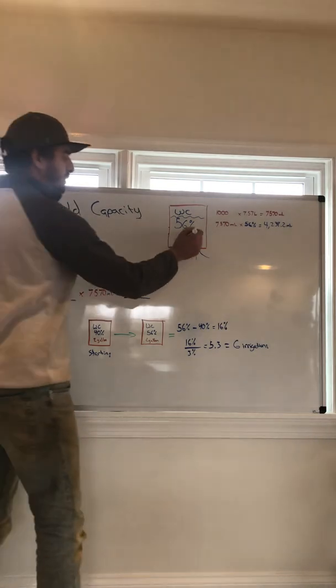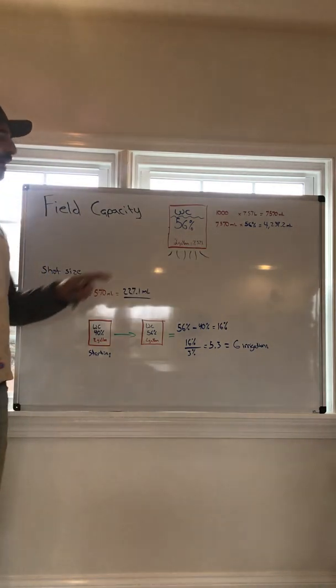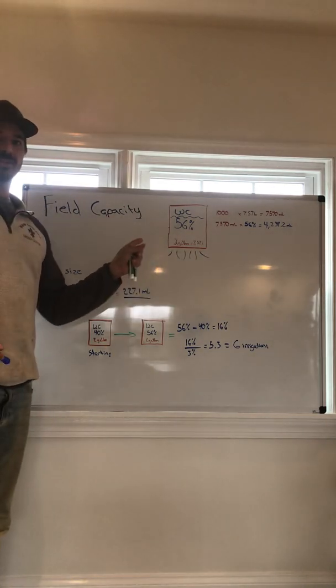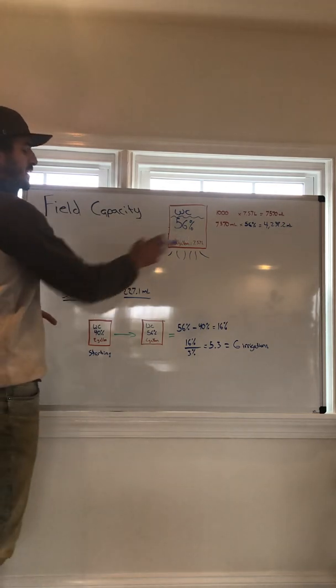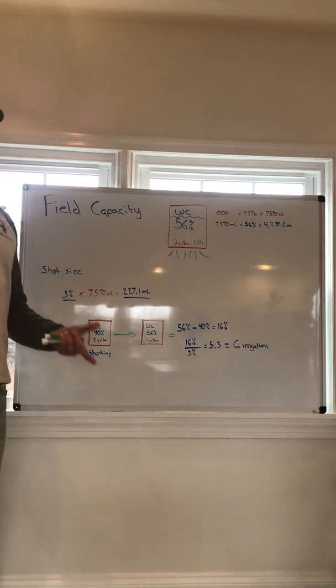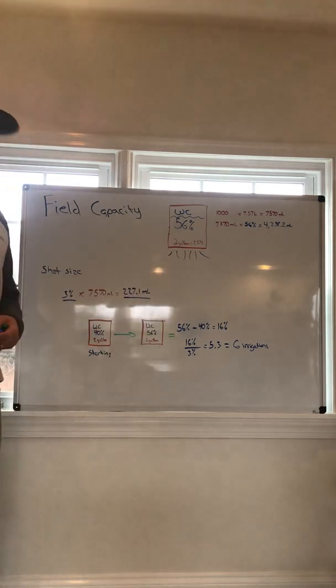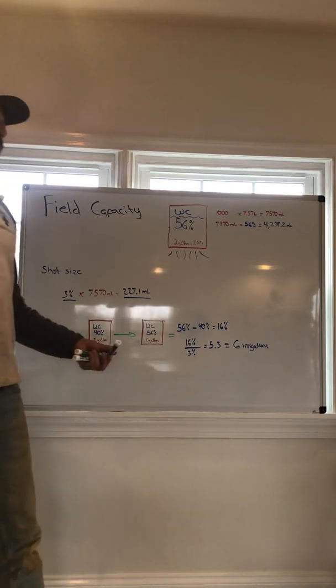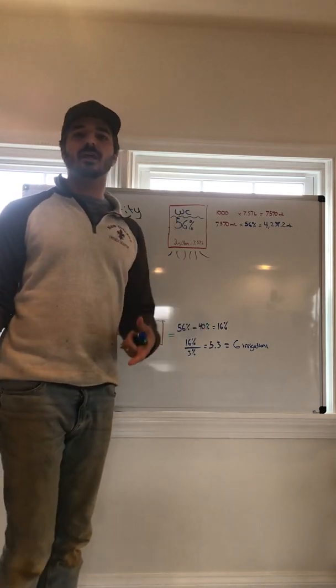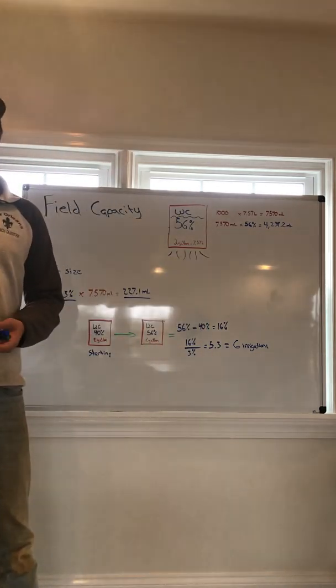So your shot size is directly reflective of your medium size. So depending upon which medium you have and how much of a volume of medium that is, your 3% will differ according to that number. Now, why do people talk about giving 3% versus a 6% or 3% versus 10%?